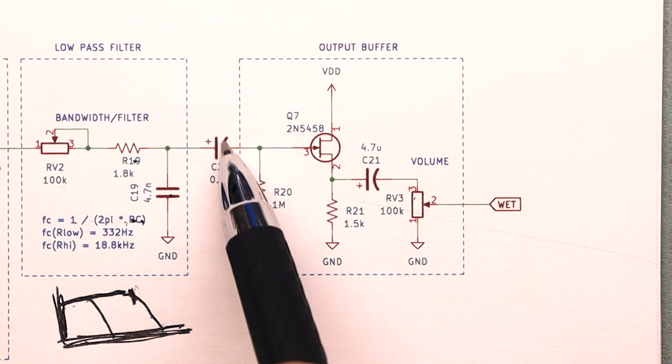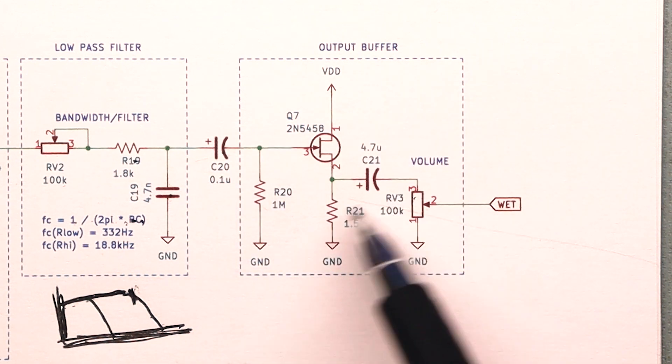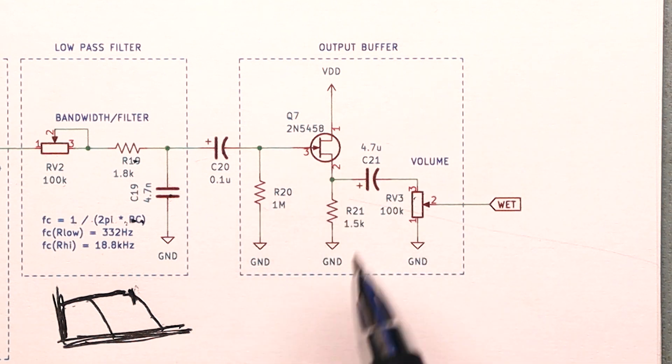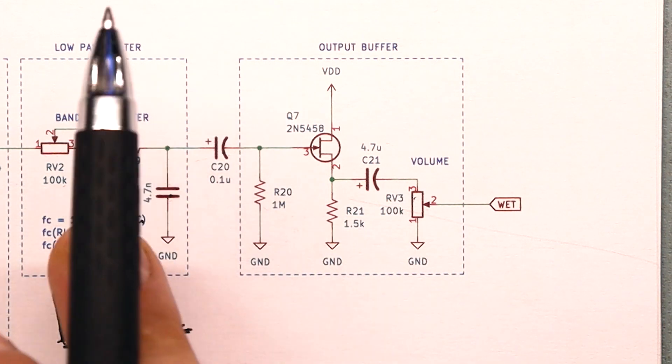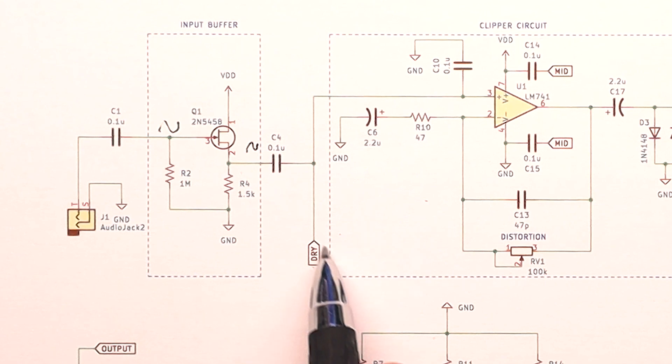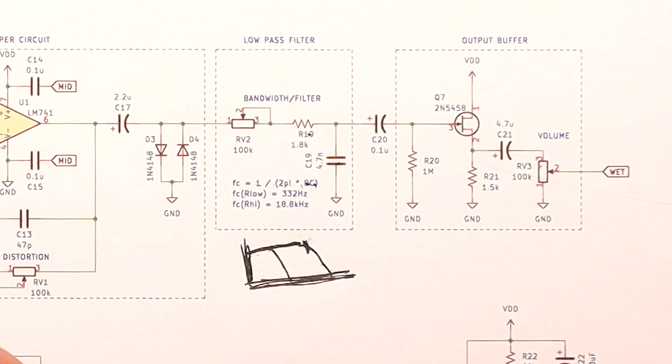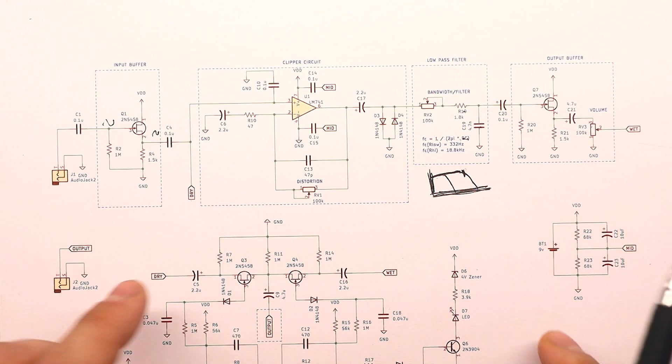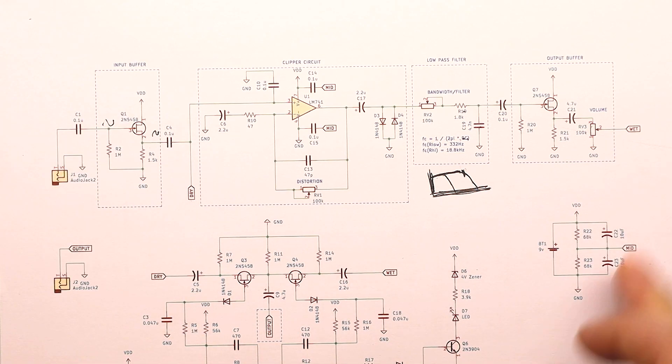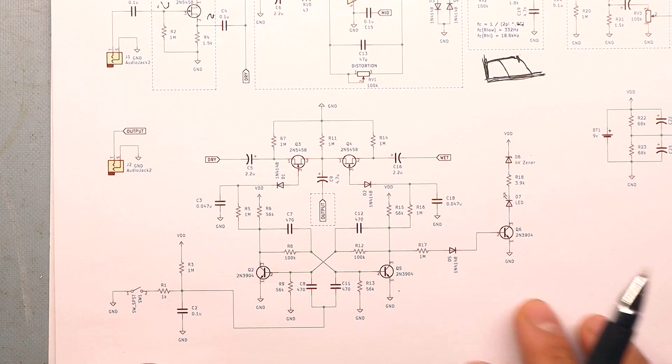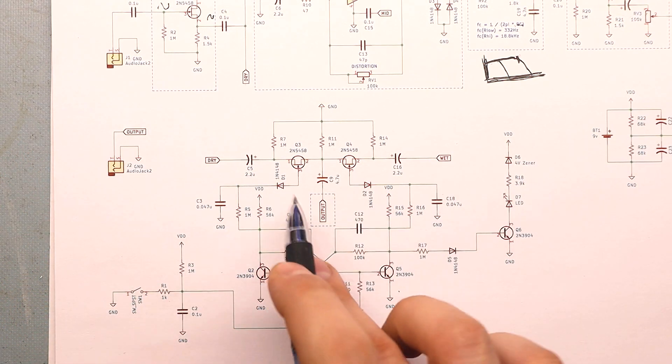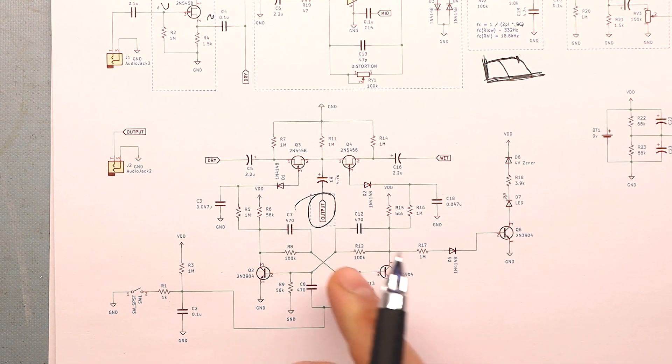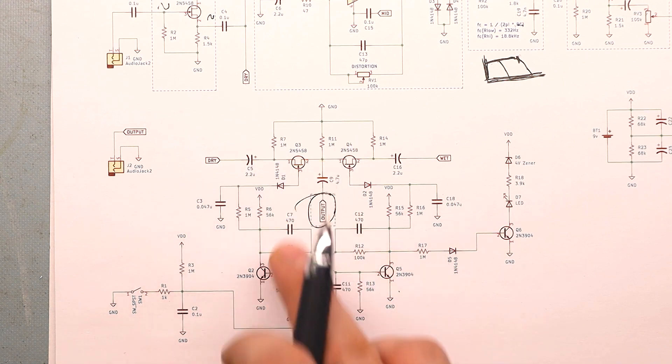After we come out of that low pass filter, we go through another coupling capacitor to an output buffer. Now this may not be entirely necessary, but I wanted to put it there to isolate impedances from stage to stage, and I didn't want this volume control to interfere with the tonal characteristics of our low pass filter. Notice that we have dry signal that comes out of our input buffer, and we have a wet signal that comes out of the end of the output buffer. So that's just audio terminology that's used dry and wet signal. Dry meaning your original signal, and wet meaning it's whatever effects you have added into it.